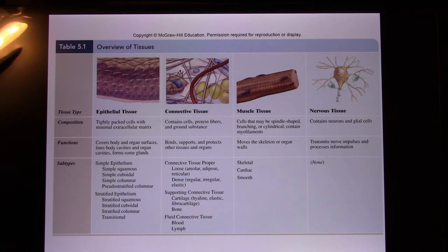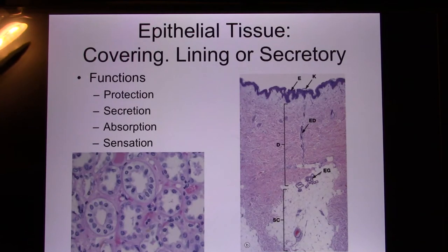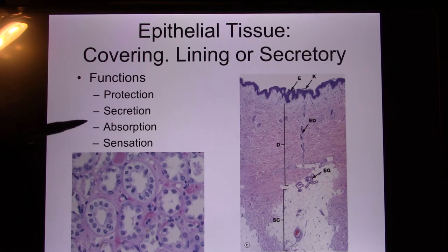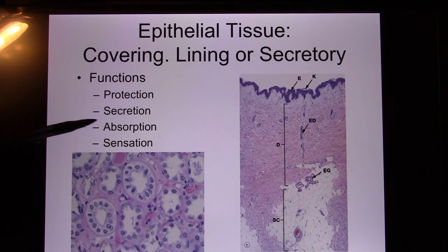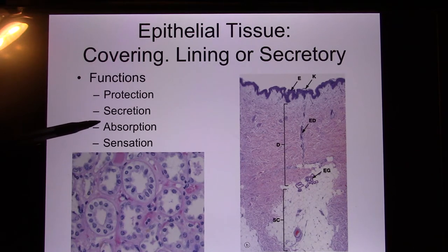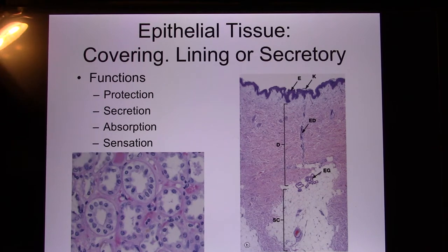Here are the four different kinds of tissues. The first one is epithelial tissue. Its functions include protection, secretion, absorption, and sensation. Think about your skin — it protects you, it secretes sweat and oil, it can absorb things like sunscreen or medicine, and your skin is also a big sensation organ.